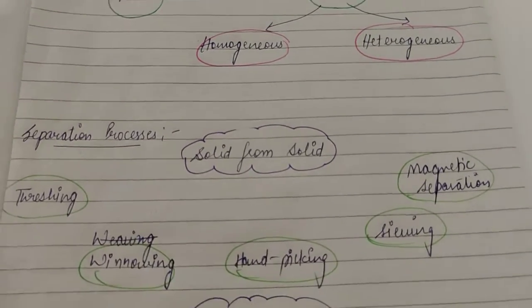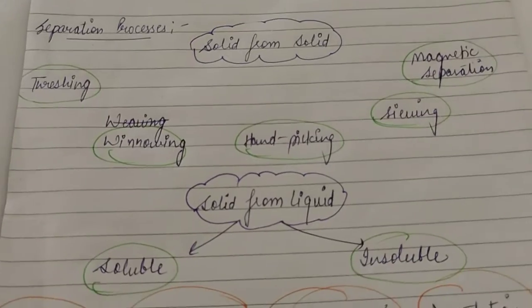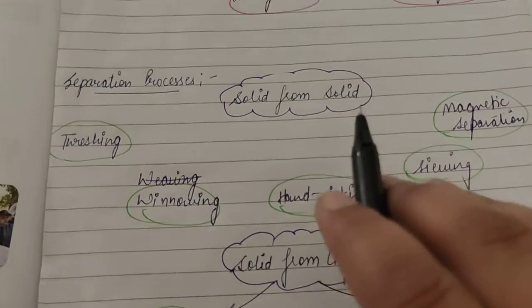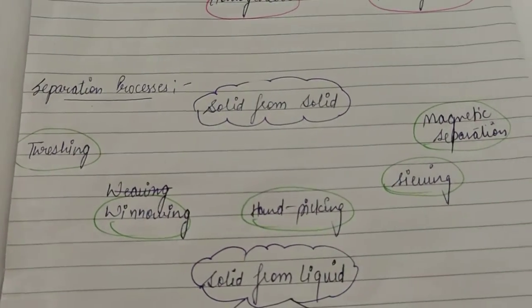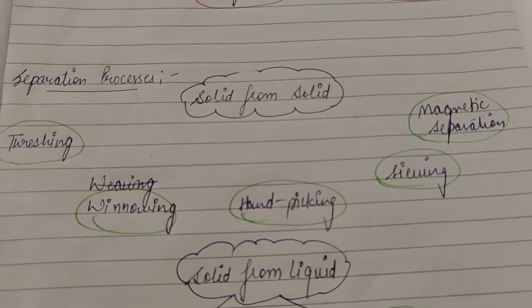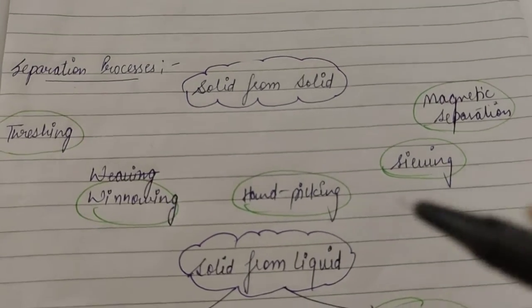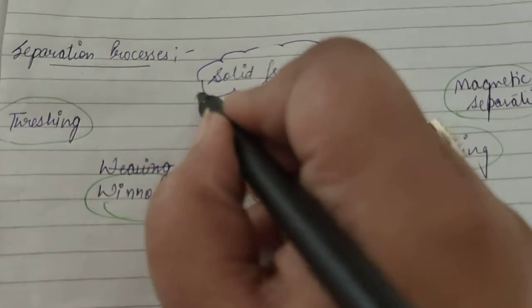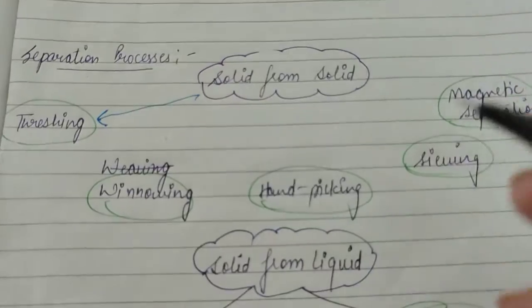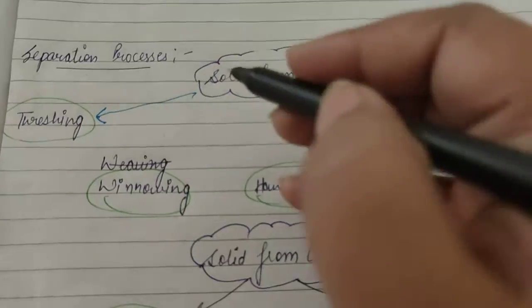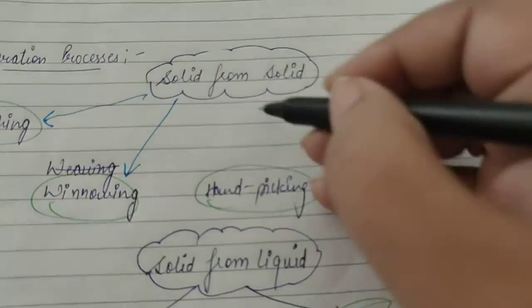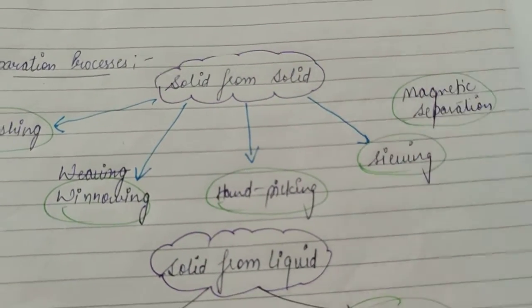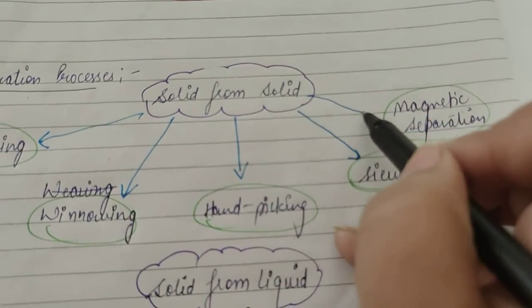Now let us do the separation substances which depends on the state of the substance to be separated. Like the first is solid from solid. If we have a mixture in which we have two types of solids, then how can we separate that? For this kind of mixture, there are five main processes: threshing, winnowing, hand picking, sieving, and magnetic separation.